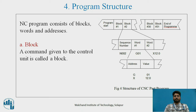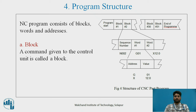Fourth, program structure. A numerical control program consists of blocks, words, and addresses. As shown in figure 4, the structure of the CNC part program consists of block 1, block 2, and so on till block 30 and block 31. One block consists of a sequence number, followed by word 1 and word 2. For example, it is shown as N002, G01. This program structure consists of blocks, words, and addresses.